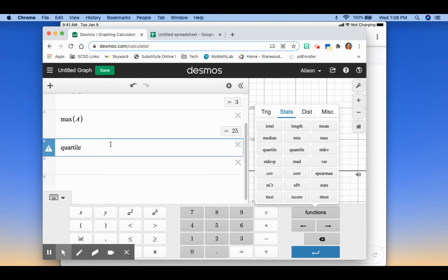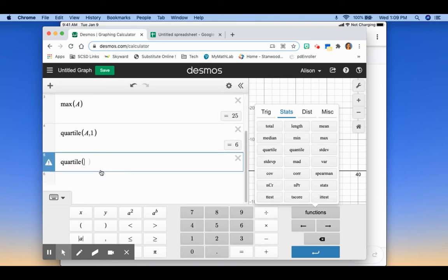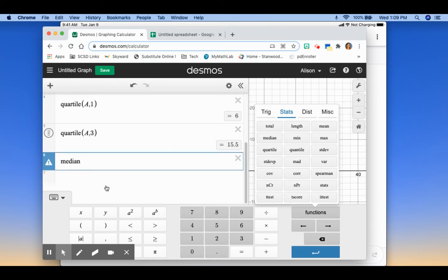But for the quartile, how you put in the quartile is I would say I want to find the quartile from list A. And then you tell which quartile you want to find. So if I want to find the first Q1, I would put A and then comma 1. If I wanted to find the third quartile, I would put A comma 3. I get 6, I get 15.5. If I want to find the median, A is 12.5.